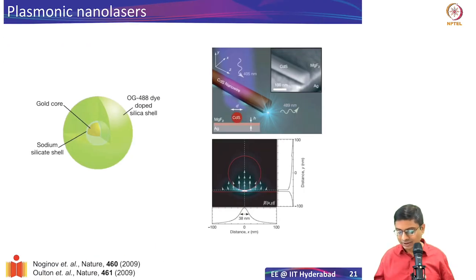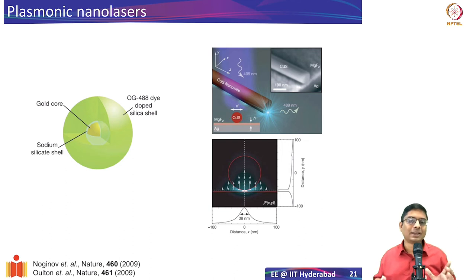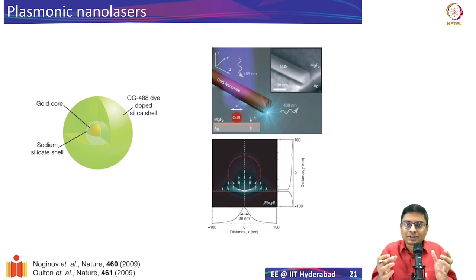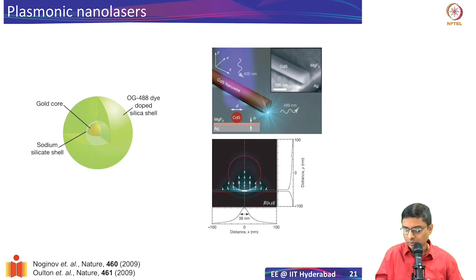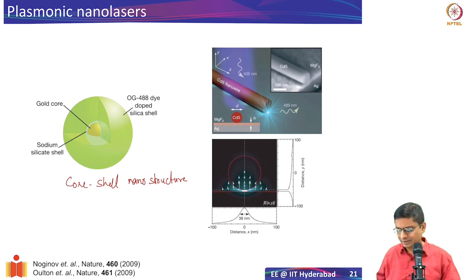One group led by Professor Noginov in Norfolk and Professor Shalaev at Purdue took a gold nanoparticle, coated it with a silica shell embedded with a dye — the dye acts as the gain medium and the gold core as the source of surface plasmons. With this core-shell nanostructure, they observed a very narrow emission wavelength, indicating lasing.